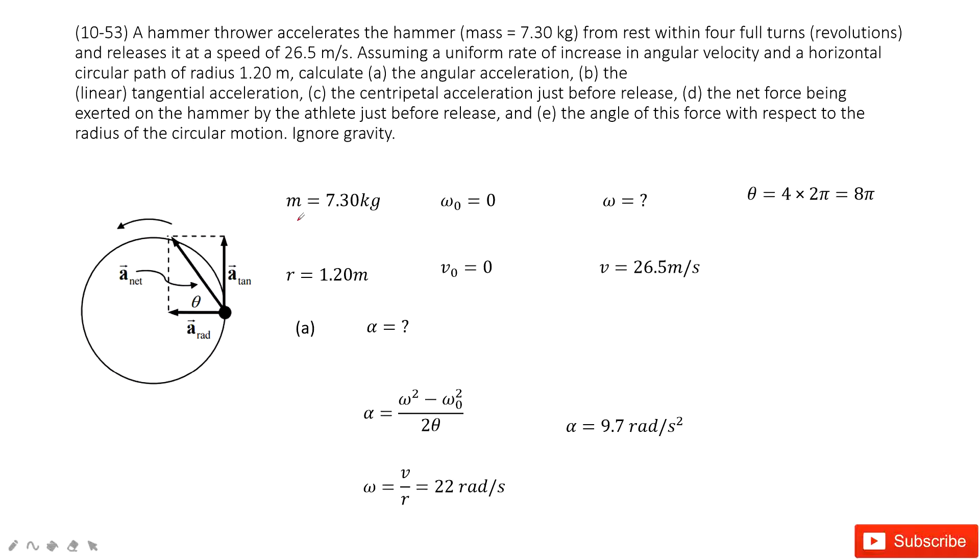First, the mass of this hammer is given, radius is given, initial angular velocity is stationary, so the initial linear velocity is zero. The final angular velocity we don't know, but we know the final linear velocity and the angle theta.